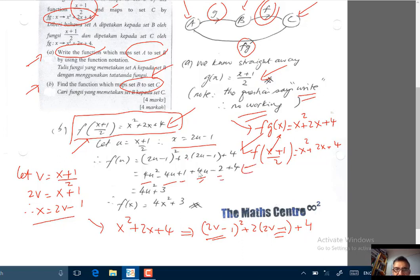So you clean this up. You will get 4u squared plus 3. So f(u) equals 4u squared plus 3. Therefore f(x) adalah 4x squared plus 3. And we are done.